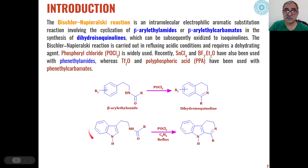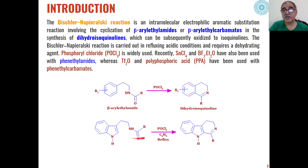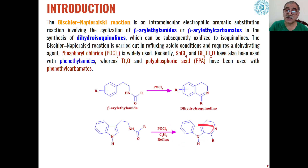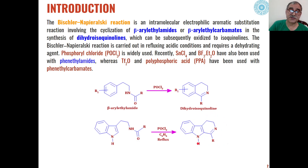You can see over here — this is an indole derivative of beta-aryl ethylamide. When this is reacted in the presence of phosphorus oxychloride in benzene as a solvent, then cyclization of this ring will take place for the formation of the dihydroisoquinoline ring.